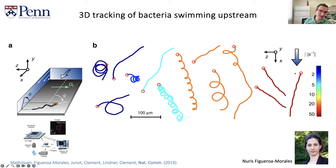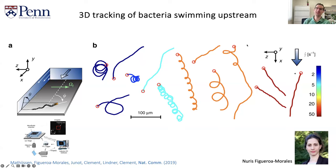The first thing that we found is that at weak flow rates, as expected, cells would swim around in circles. But if you increase the flow speed a little bit, then they would break out of these circles and start swimming upstream — upwards and to the right in this picture. And then above some critical flow rate, the orange trajectories start moving downstream.